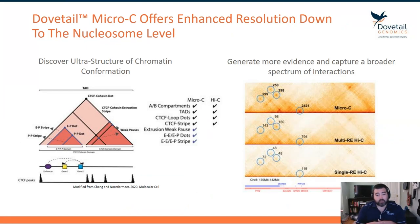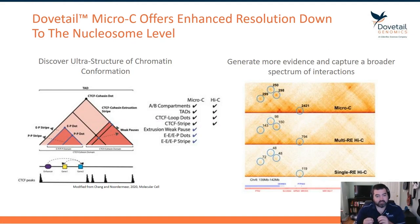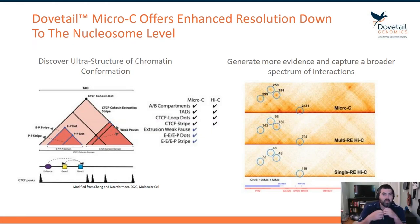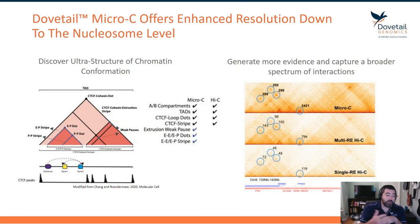The Micro-C approach uses MNase fragmentation, giving us that nucleosome-centric view of topology. This allows us to capture the larger topology features like A/B compartments, TADs, and CTCF-mediated events, but it also allows us to zoom in even further on the building blocks of chromatin to look at specific enhancer-promoter interactions, even look at things like loop folding, and things like bivalent chromatin — a very unique aspect of our genome that you can visualize very strongly through this data type.